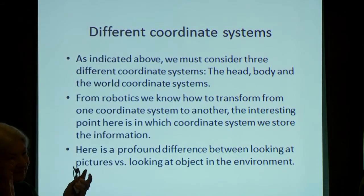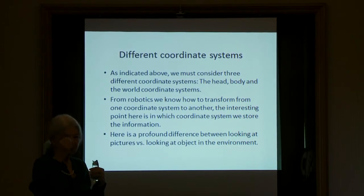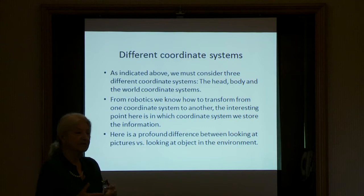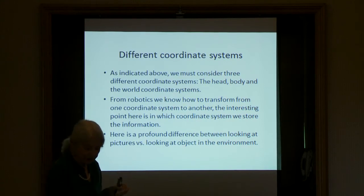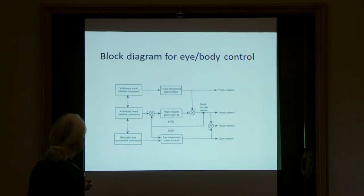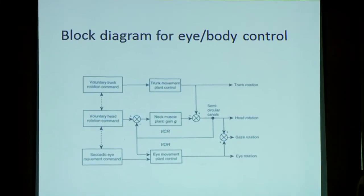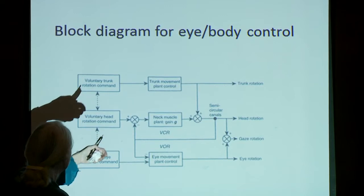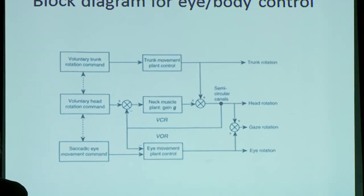The interesting question is in which coordinate system we store information — object-centered, head-centered, or eye-centered, as Berthold Horn discussed some 30 years ago. My view from the robotics perspective is that one has to be pragmatic and store it in whatever way you are going to use it. Here is a block diagram for eye-body control. Those of you who are systems engineers will understand: voluntary trunk rotation, voluntary head rotation, and saccadic commands all have to play in coordination or in sequence.